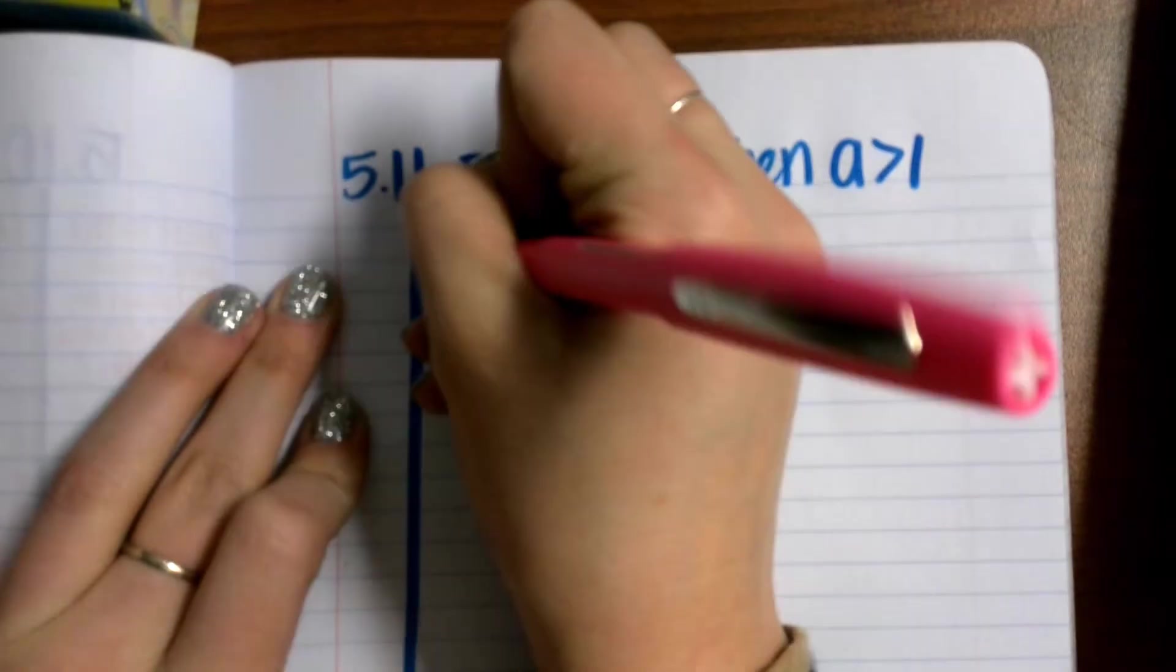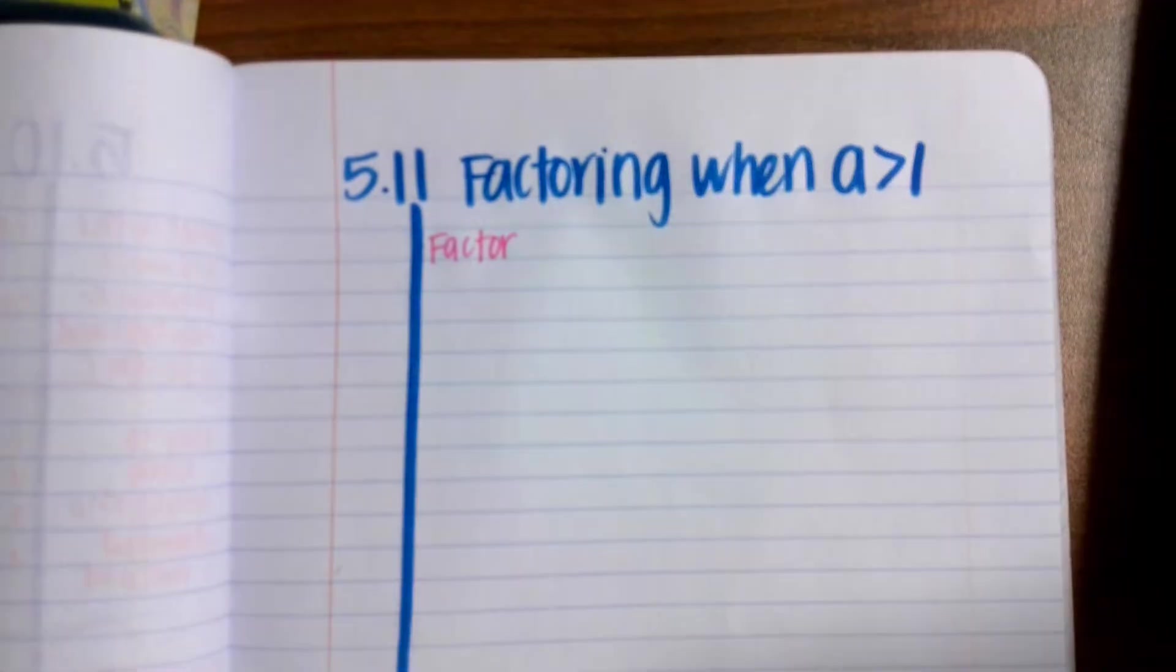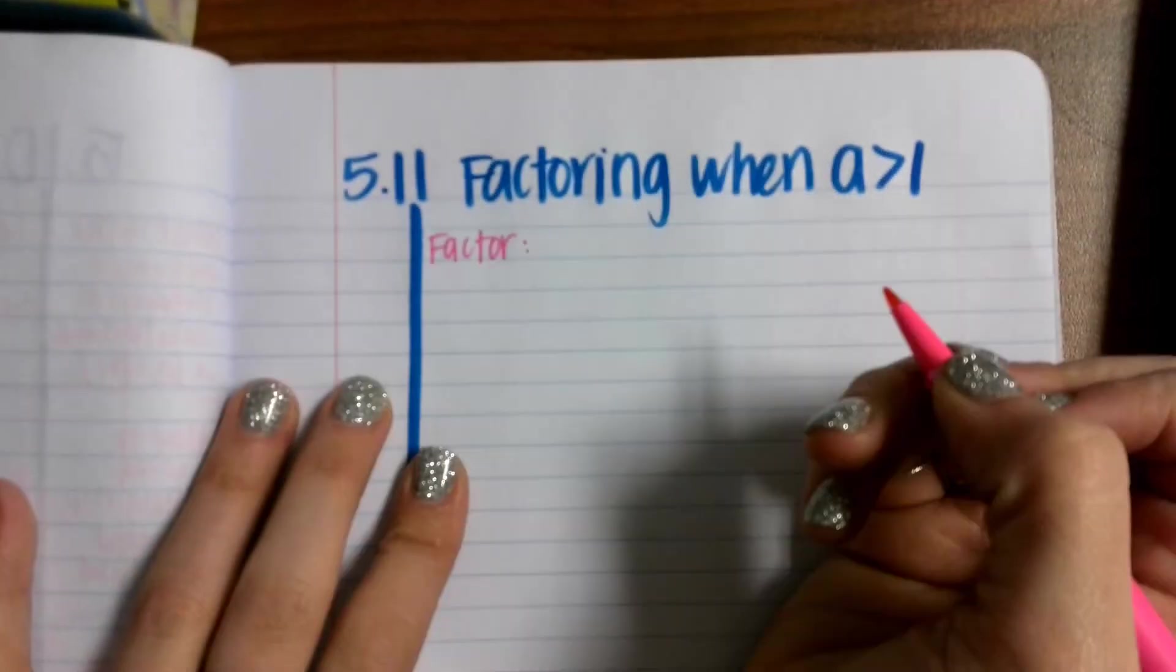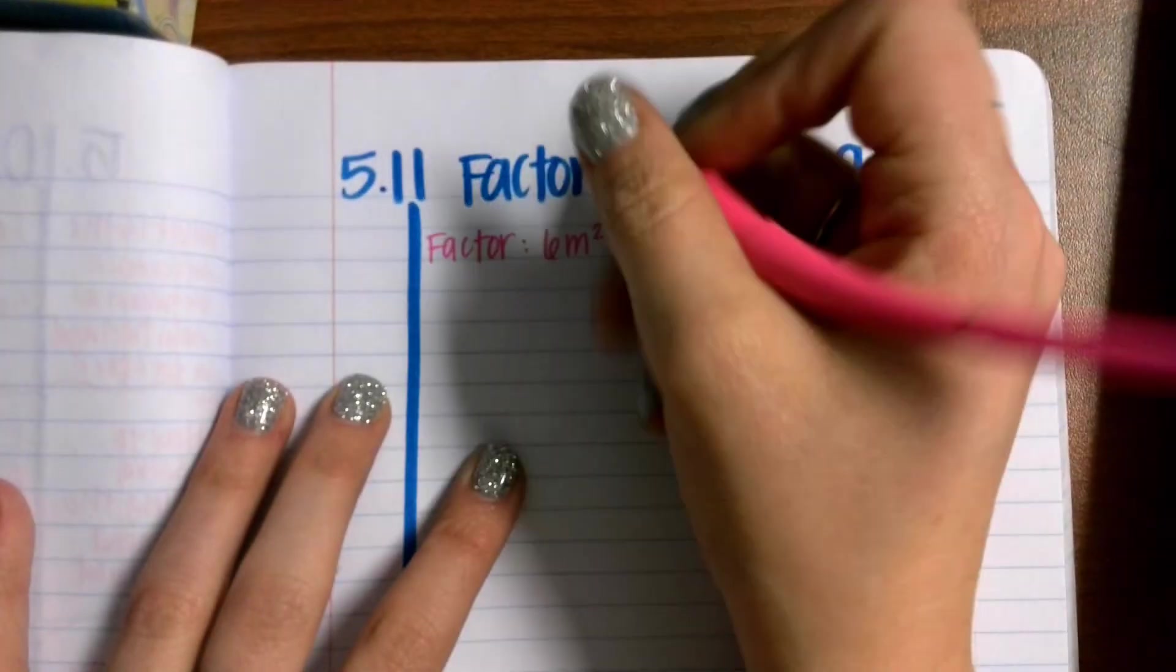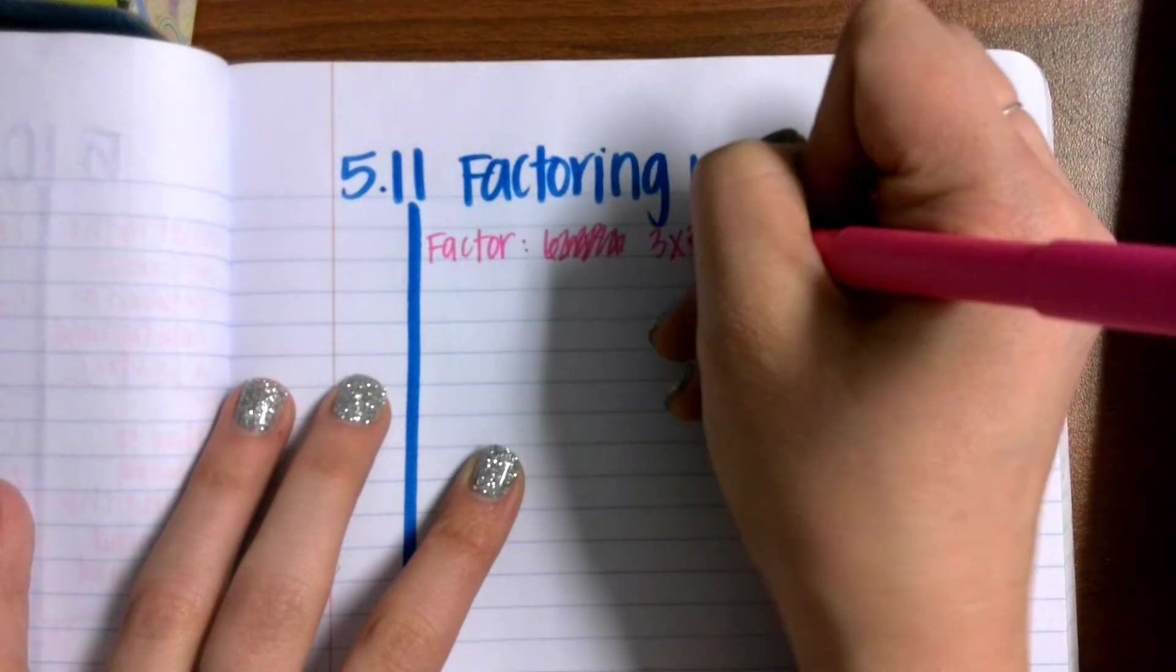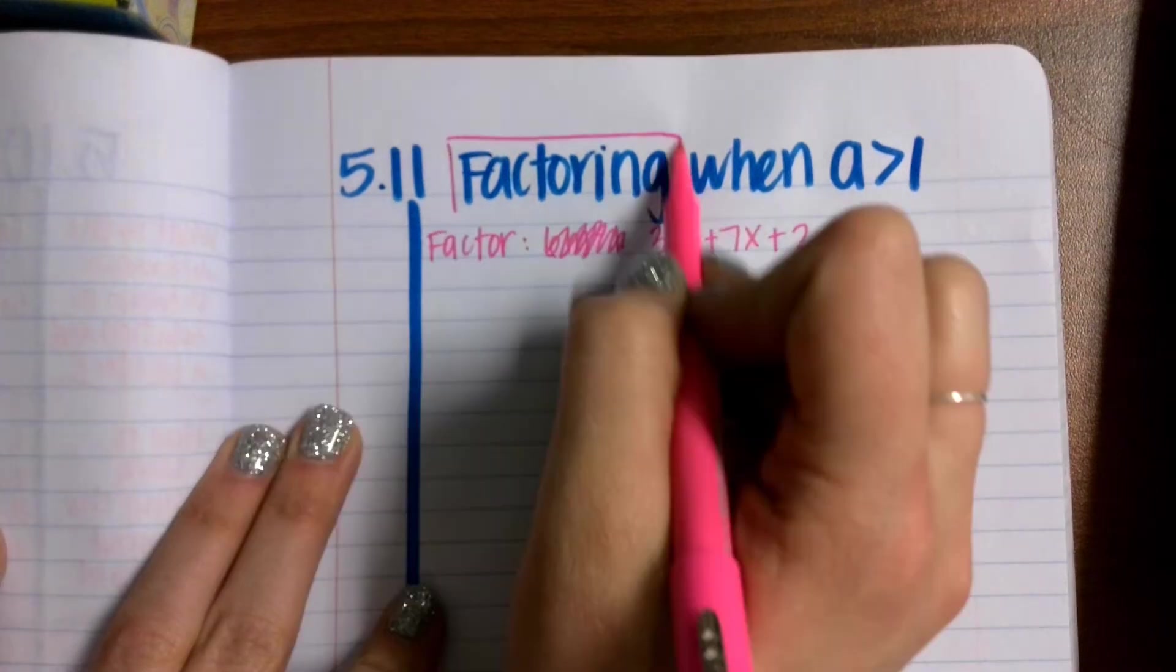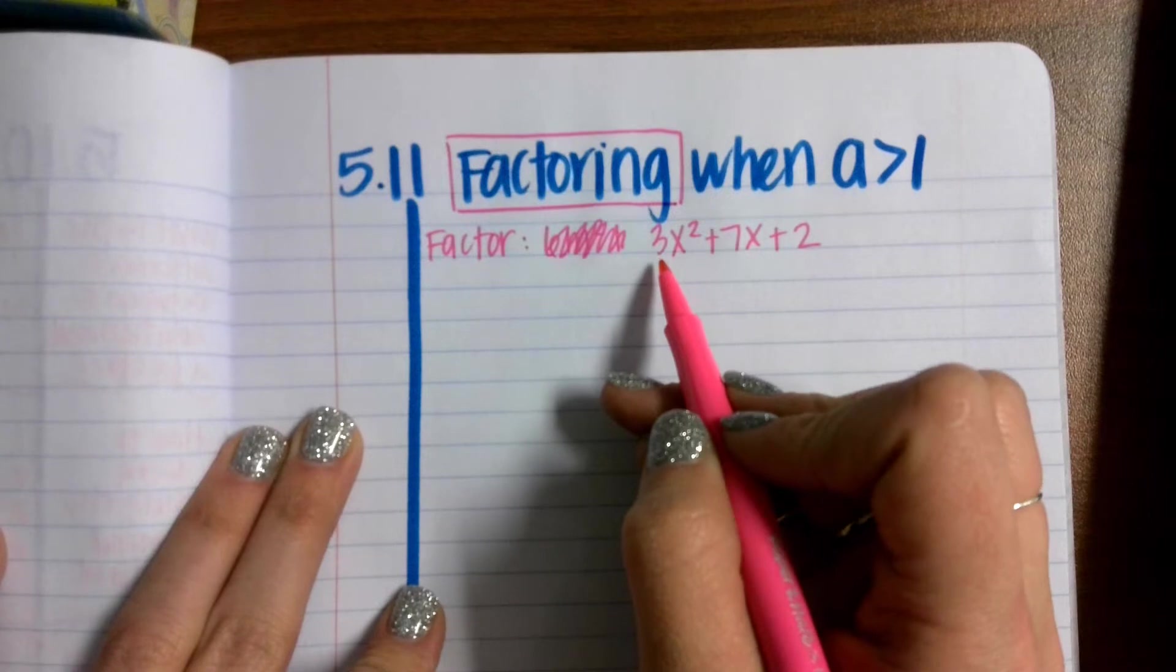Factor. We're going to just dive right into examples. So you'll write factor. 6m squared. Oops. Let's do 3x squared plus 7x plus 2. So now I want to go back to the fact that this is factoring, and now our A does not equal 1. We're missing the equal sign, and now A doesn't equal 1.